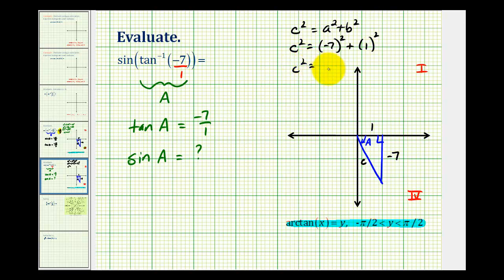So we have C squared equals 50. And we know C has to be positive, so C is equal to the square root of 50, which simplifies to five square root two.